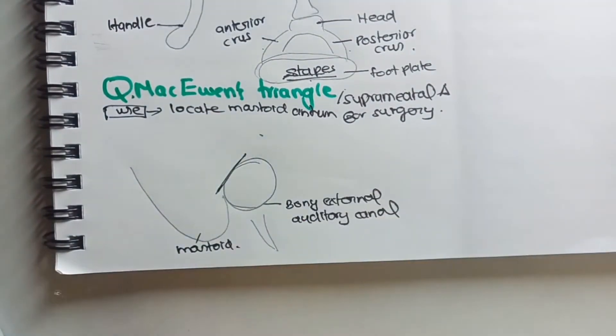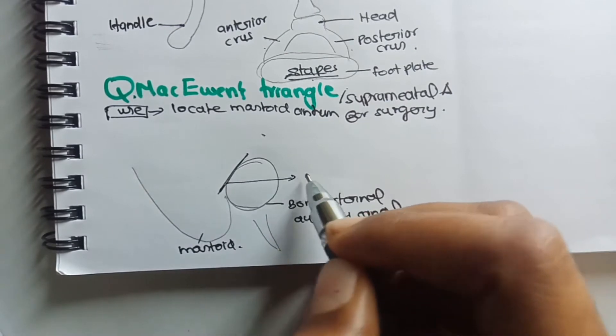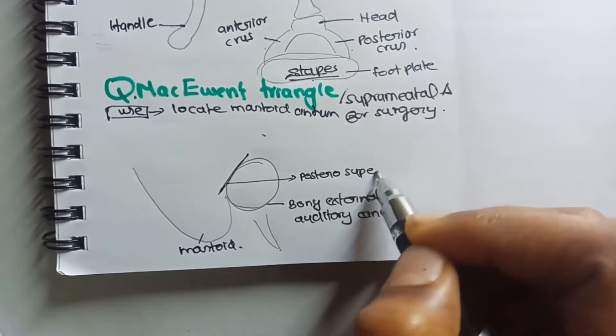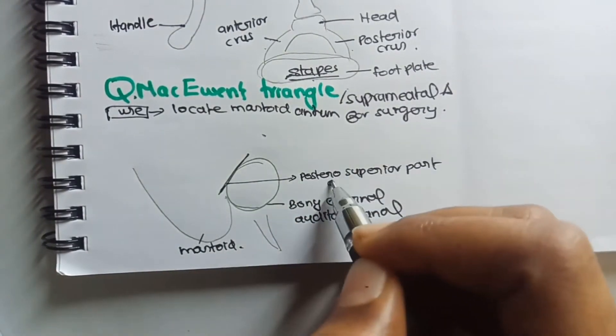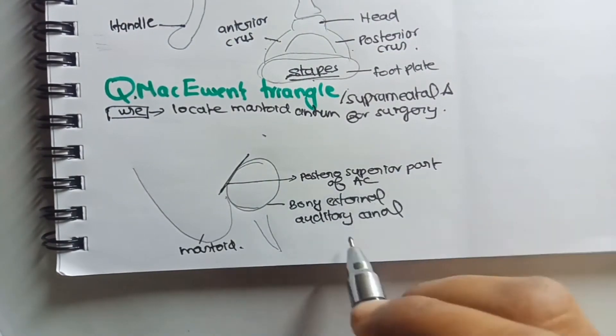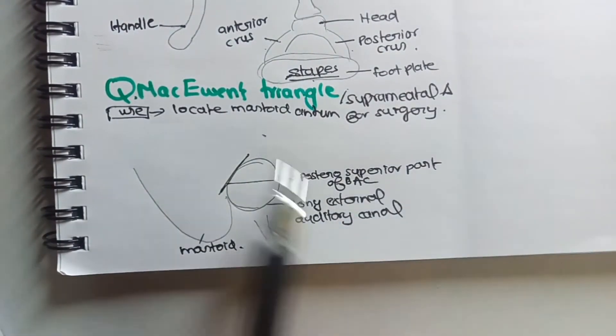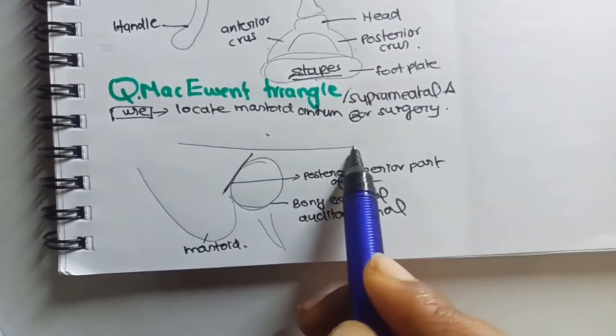Now first is the anterior border. The anterior border is the posterosuperior part of the bony external auditory canal. So this is the anterior part.